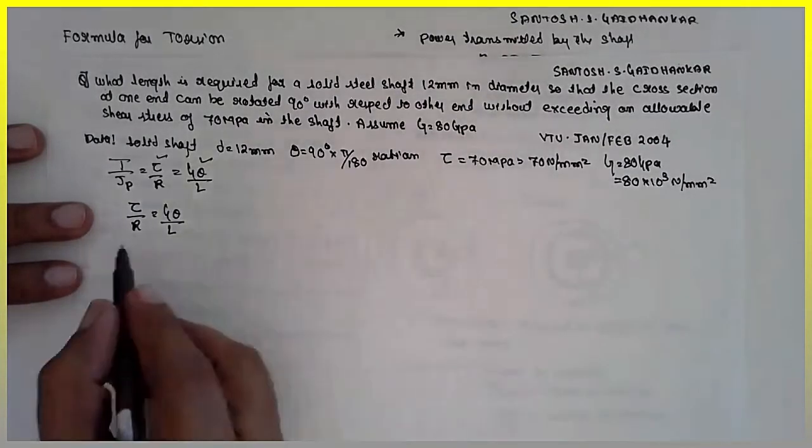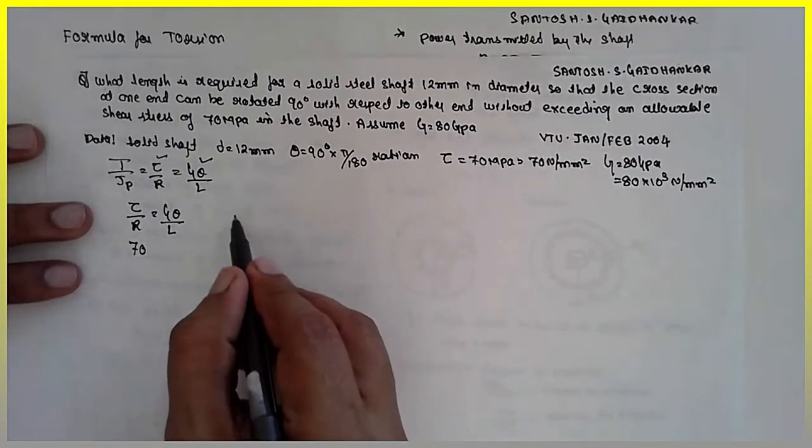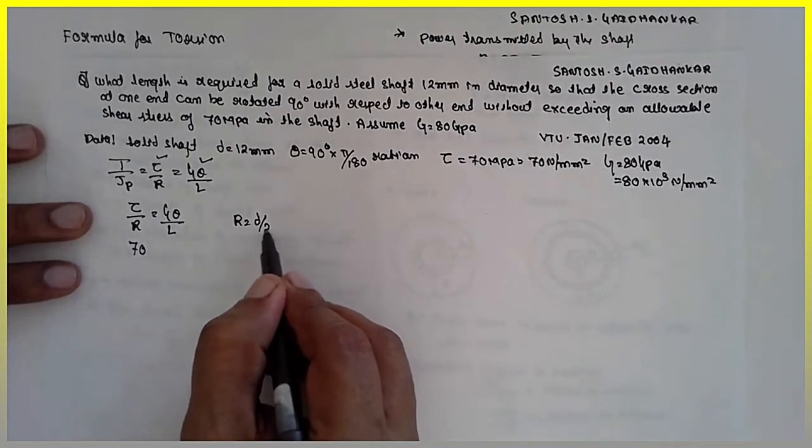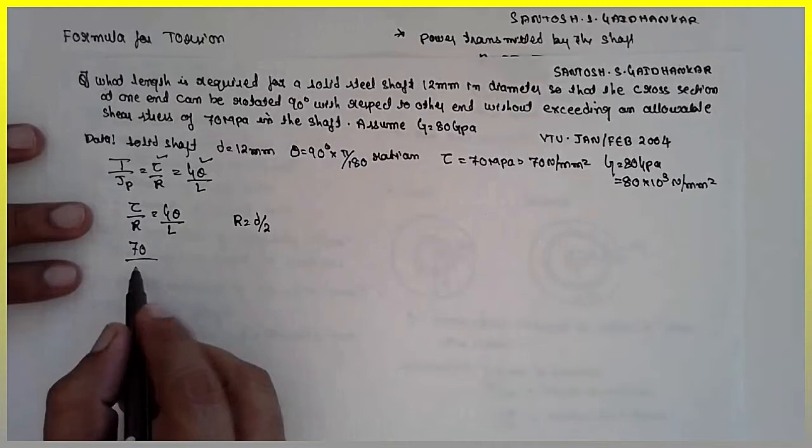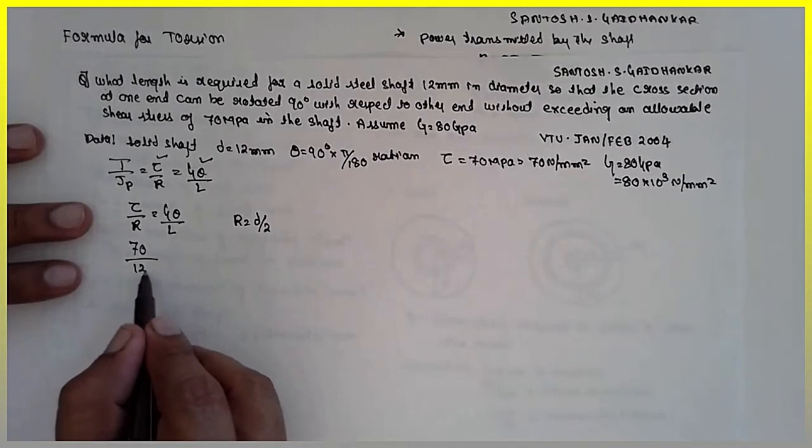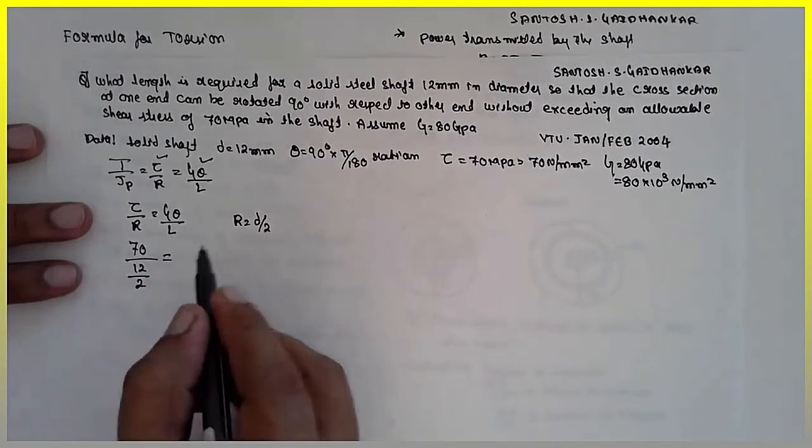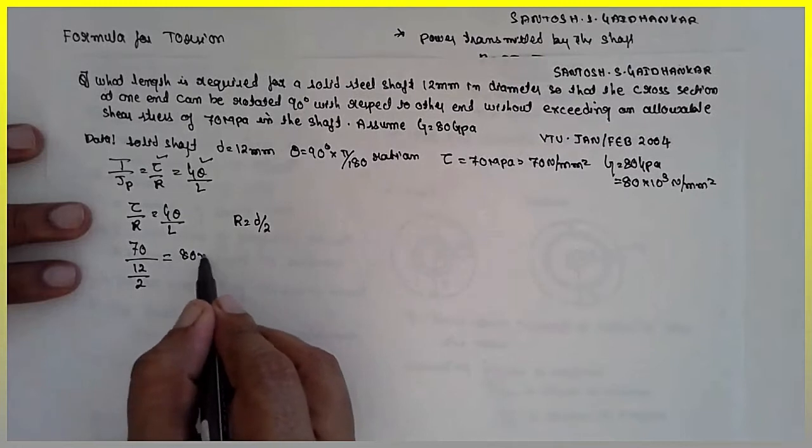Tau is 70. What is R? R is D by 2, D by 2. What is D here? 12 divided by 2. G is 80 into 10 raised to 3.